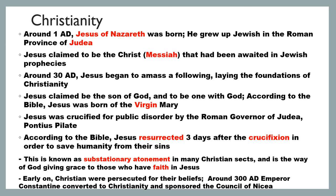Early on, Christians were persecuted for their beliefs in the Roman Empire. Then around 300 AD, Emperor Constantine converted to Christianity and sponsored the Council of Nicaea. It was in the 3rd century AD that Constantine converted to Christianity and it became legal within the Roman Empire, and about 100 years after that it became the official religion of the Roman Empire.